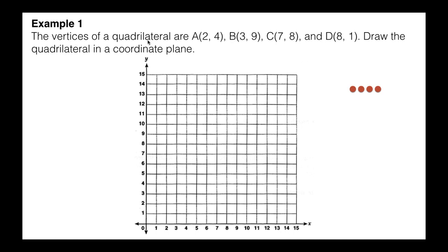The vertices of a quadrilateral are: A is at (2, 4), B is at (3, 9), C is at (7, 8), and D is at (8, 1). Draw the quadrilateral in the coordinate plane. The most important thing to remember is that the x coordinate comes first, then the y. So when we're looking at A, this 2 is my x coordinate and that 4 is my y coordinate.